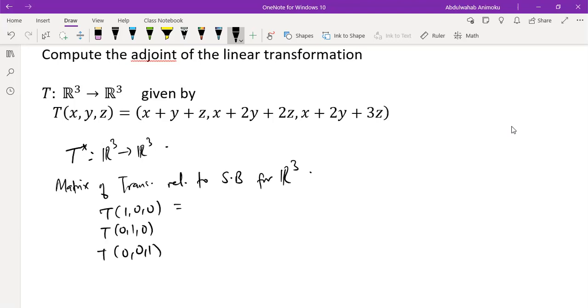This basically means our x is 1, y is 0, and z is 0. When we input that into this transformation, we'll have the first component to be 1 because x is 1 there, y is 0, z is 0. So we have 1 plus 0 plus 0, so we have 1. In the second component we have 1 as well. In the third component we also have 1.